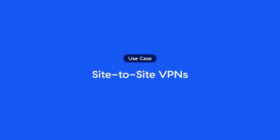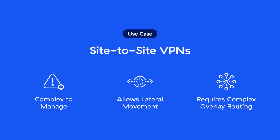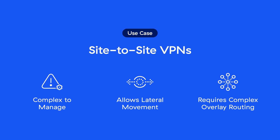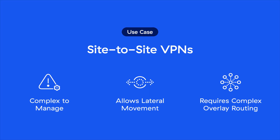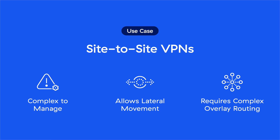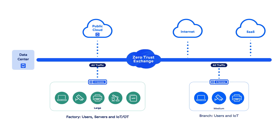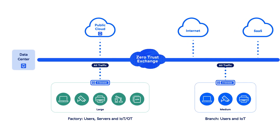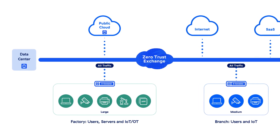Zscaler's Zero Trust SD-WAN helps you address a number of enterprise WAN requirements. The first key use case is site-to-site VPN replacement. Site-to-site VPNs are complex to manage and vulnerable to exploits. They allow lateral movement of threats unless sufficiently segmented and require additional complex overlay routing to provide reachability and resiliency. Zero Trust SD-WAN eliminates legacy site-to-site VPNs and provides explicit zero-trust connectivity between your users, devices, and applications without additional firewall or VPN appliances.